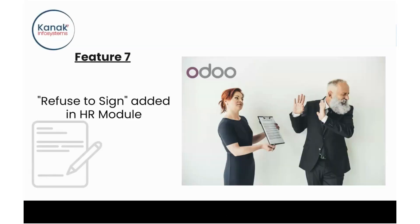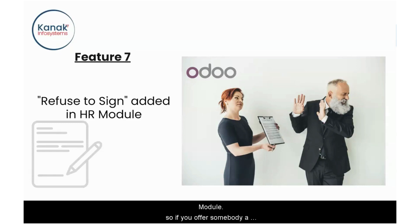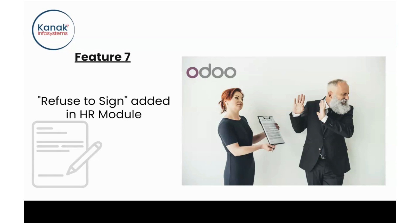Feature number seven: an option to refuse to sign has been added in the HR module. So if you offer somebody a contract and they would not want to sign it, they can use that feature.